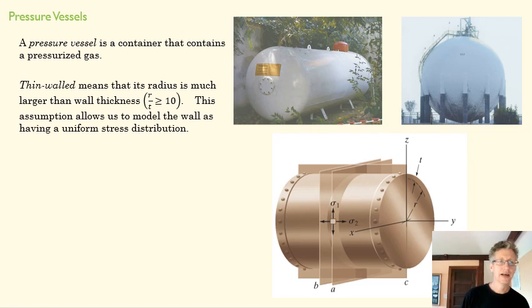Thin-walled just means that the radius of the vessel is much larger than the wall thickness, so the ratio of the two is going to be larger than 10. And that allows us basically to ignore a lot of the stuff that's going on within the walls because it's going to be pretty straightforward what's going on within the walls when they're really thin. If they get thicker, you're going to get more significant shear stresses and other kinds of complications in there. But in a thin-walled vessel, we can ignore those.